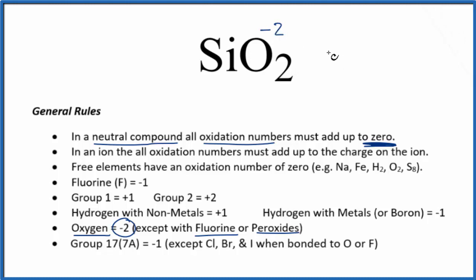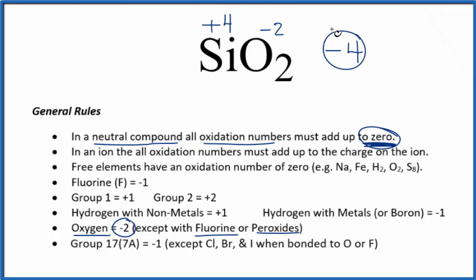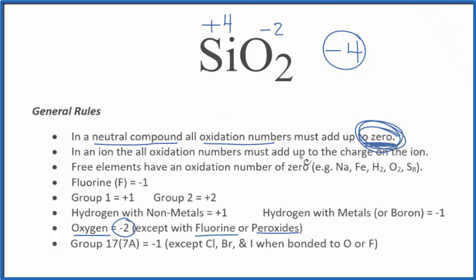Two times minus two gives us minus four. Since all oxidation numbers must add up to zero, we need a plus four as the oxidation number for Si in SiO₂. Two times minus two is minus four, and plus four adds up to zero. This is Dr. B with the oxidation numbers for SiO₂. Thanks for watching.